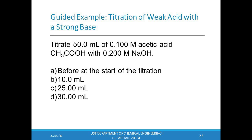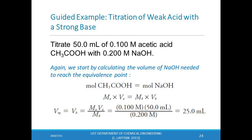Example: Titrate 50.0 mL of 0.100 M acetic acid with 0.200 M NaOH. Calculate the pH before titration, after 10 mL, after 25 mL, and after 30 mL of titrant. The reaction involves direct proton transfer from acetic acid to hydroxide ion in a 1:1 ratio. First, determine the volume of NaOH needed to reach the equivalence point — this is 25.0 mL. Therefore, all volumes below 25 mL belong to the pre-equivalence point region.